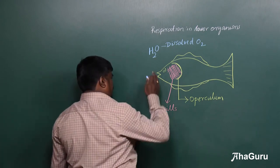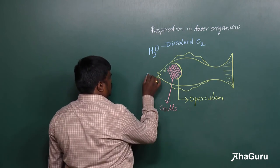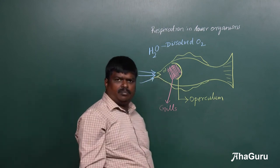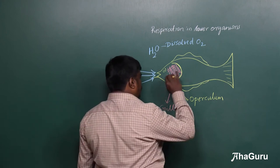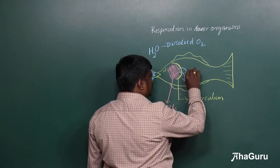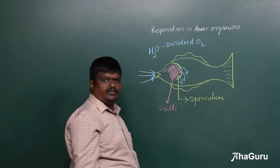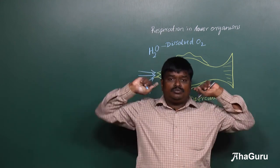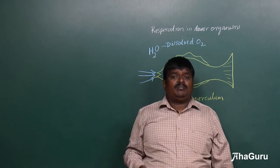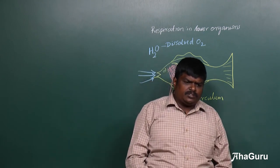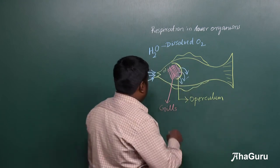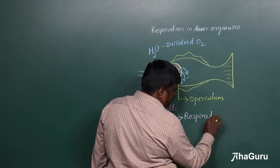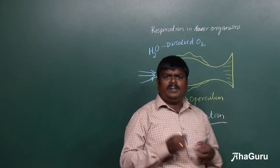So how does the organism take up oxygen? The water enters inside the mouth and comes out through the operculum. As the water passes from the mouth through the operculum, the gills take up the oxygen. With the help of these gills, respiration takes place. Now you can understand that lower organisms have specialized structures or mechanisms to take up oxygen and give out carbon dioxide.